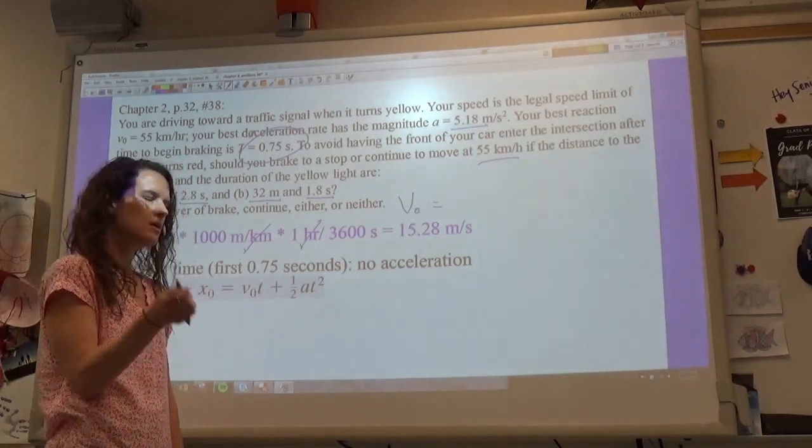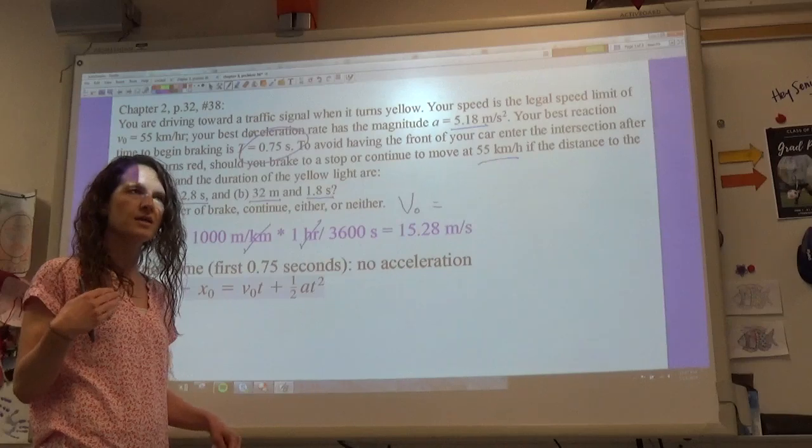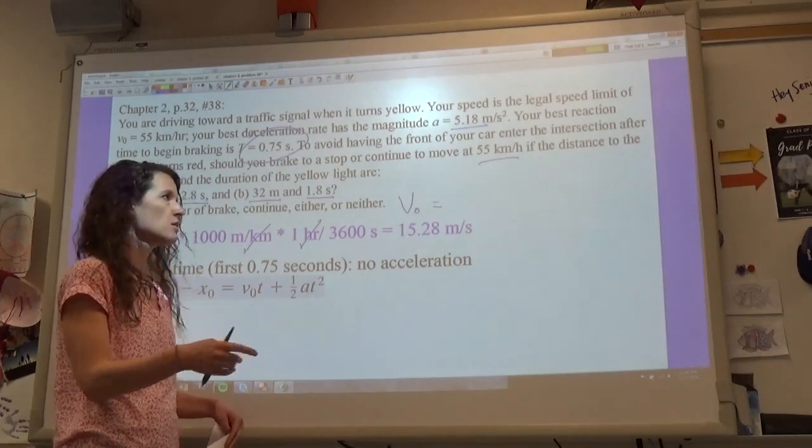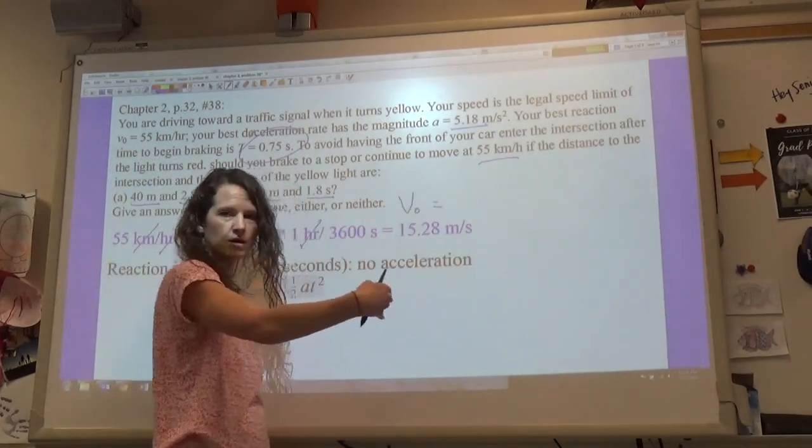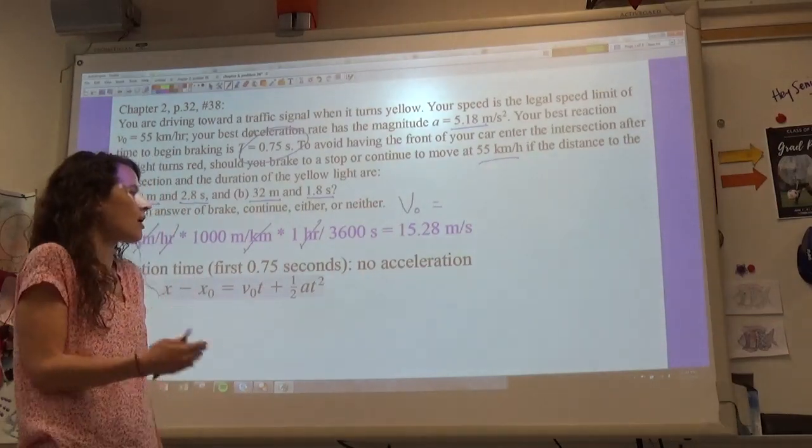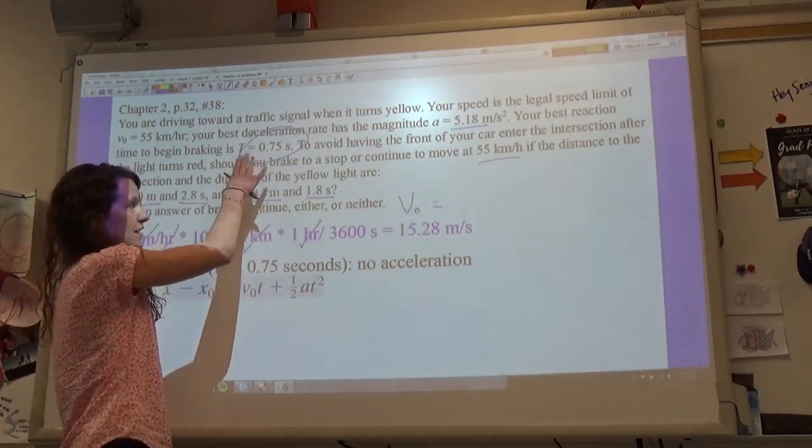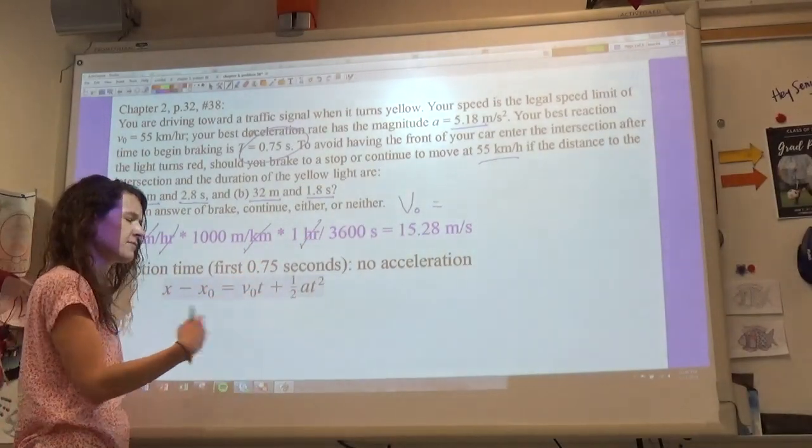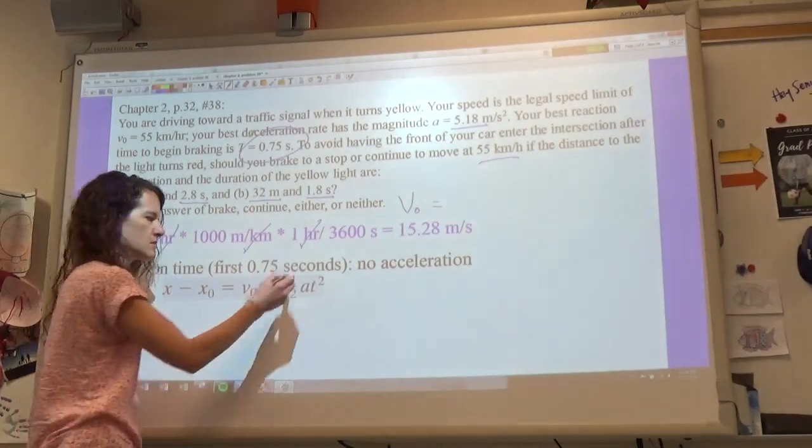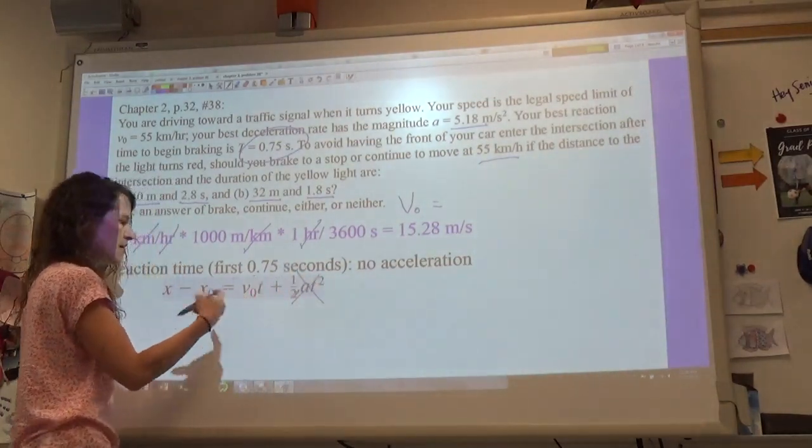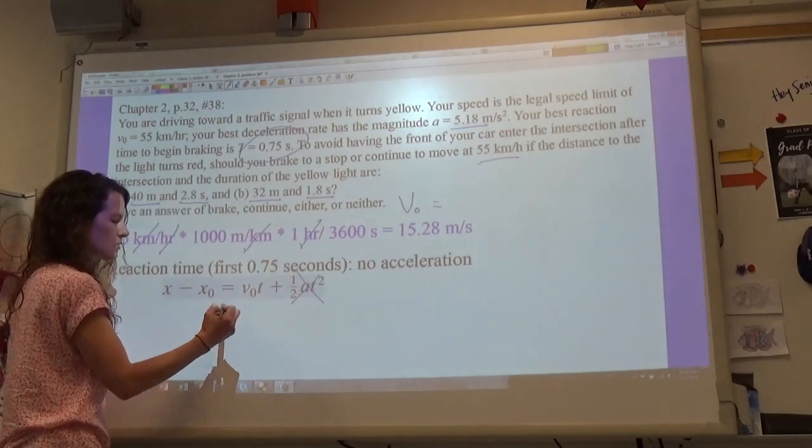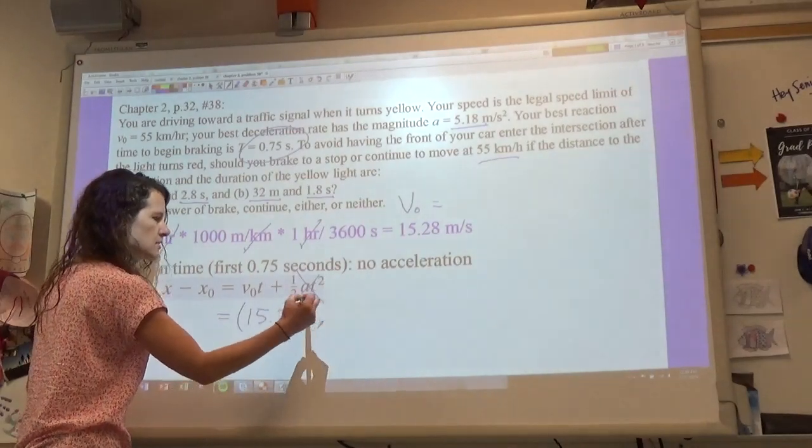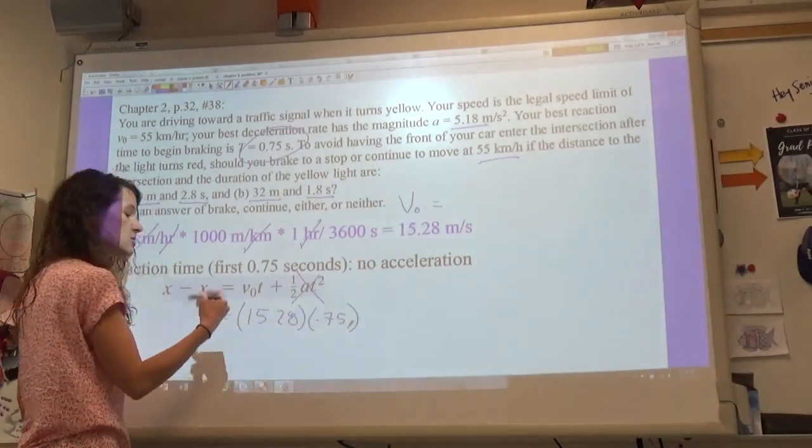So first we're going to try to figure out if we can stop in the right amount of time. And so for that first 0.75 seconds we are not decelerating at all, we're just continuing at our constant velocity. And so we need to figure out how far we go with that amount of time with our constant velocity. So I'm going to use this kinematic equation, but if it's our reaction time we are not decelerating at all, and so this acceleration is canceled out. And so my distance is going to equal to my velocity times time, so that's 15.28 meters per second times 0.75 seconds.